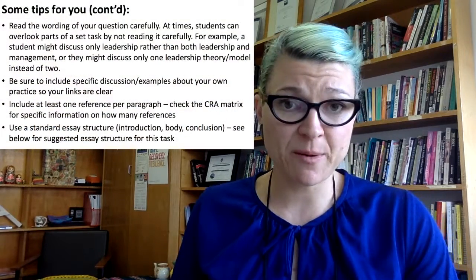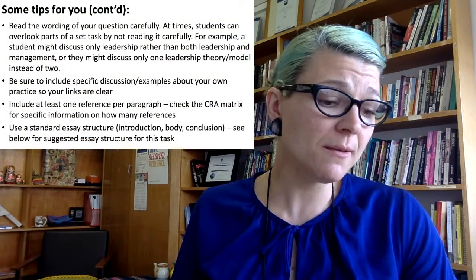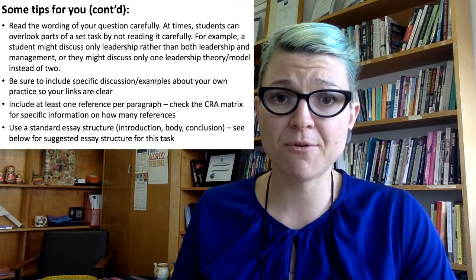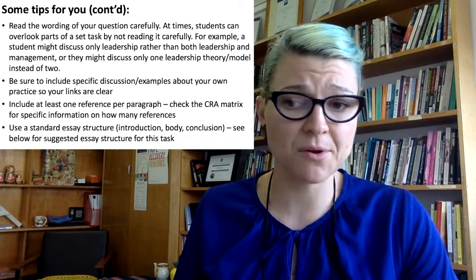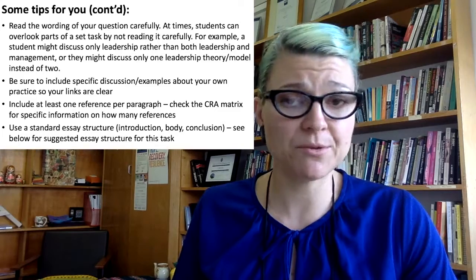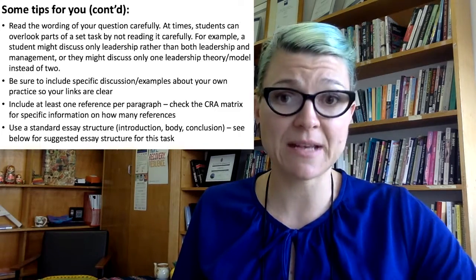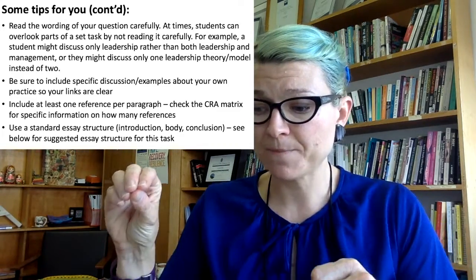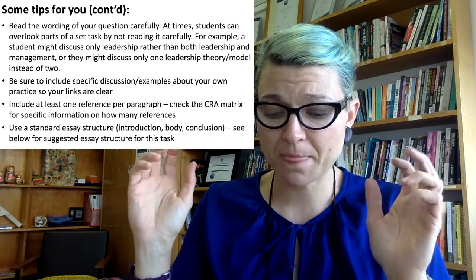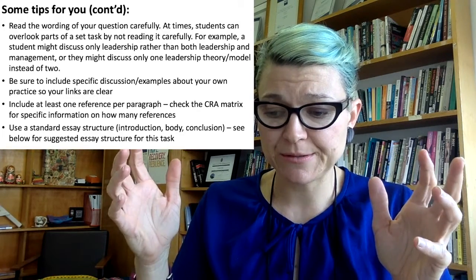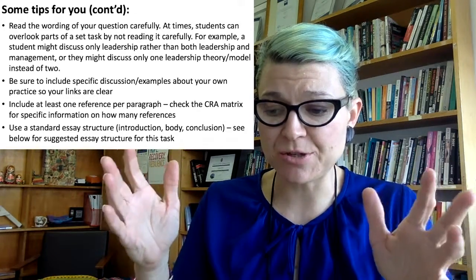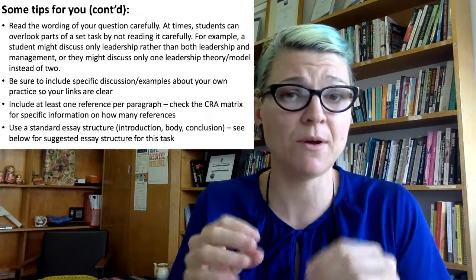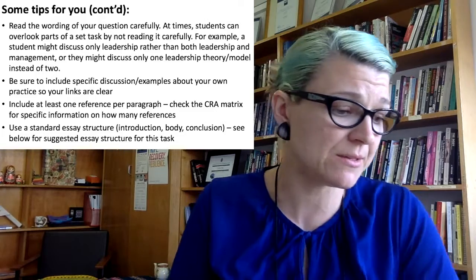Include at least one reference per paragraph. Check the CRA marking rubric that I've uploaded — it will tell you exactly how many to do in each section. If you want to get a high distinction, it will say at least 10 references. So make sure you check that and use it like a checklist.